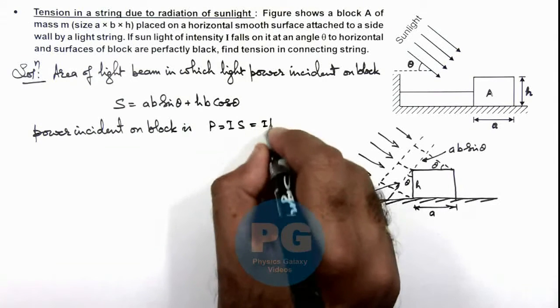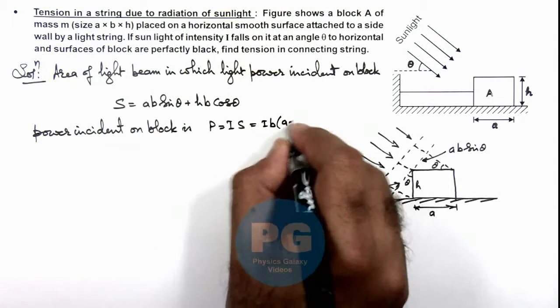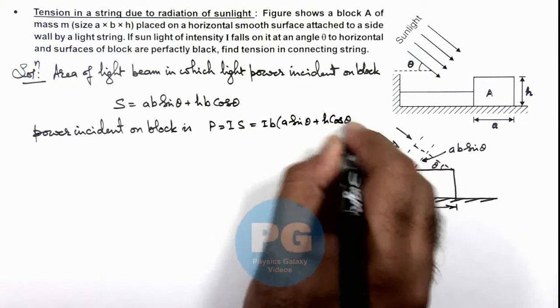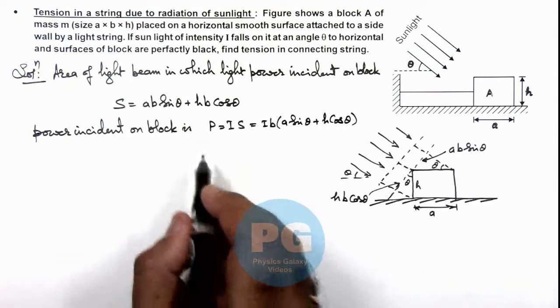So here this is Ib multiplied by a sinθ plus h cosθ. This is the power we are getting.